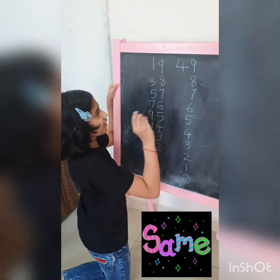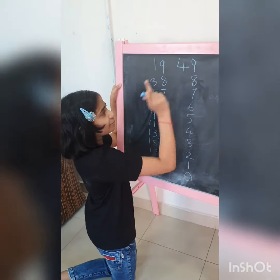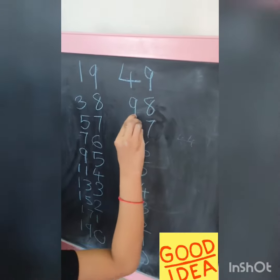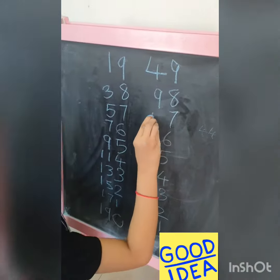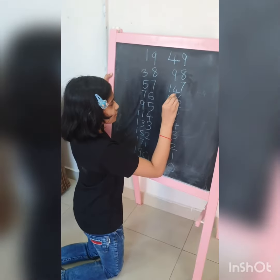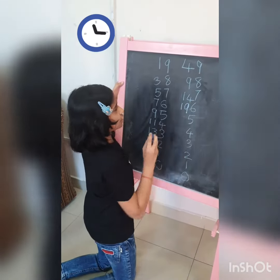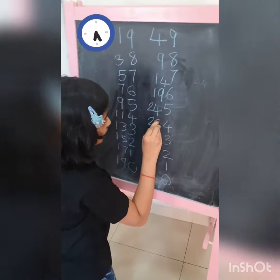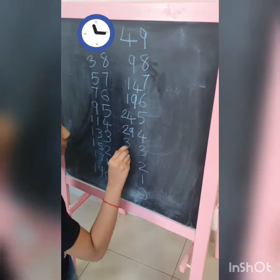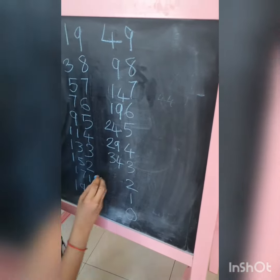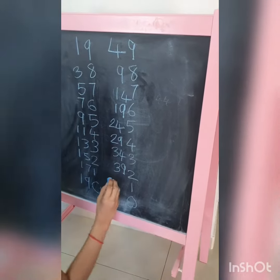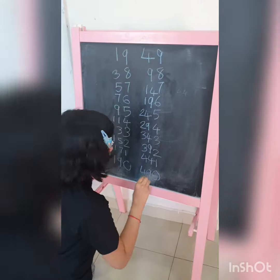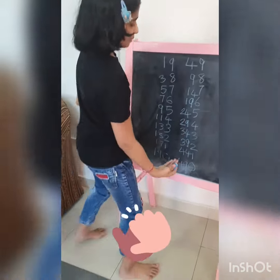Now the same thing again — we will add the number that comes after 4, which is 5. So: 4 plus 5 is 9, 9 plus 5 is 14, 14 plus 5 is 19, 19 plus 5 is 24, 24 plus 5 is 29, 29 plus 5 is 34, 34 plus 5 is 39, 39 plus 5 is 44, 44 plus 5 is 49. So this is the table of 49.